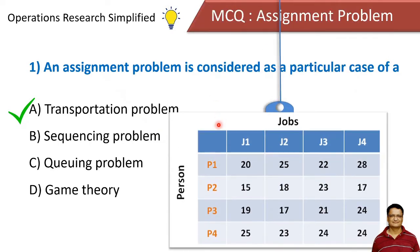In a typical transportation problem, there are certain resources and certain activities, and you have to assign each activity to each resource. Here we are assigning jobs to persons, so each job will be assigned to only one person. This is a transportation problem, but with special features.